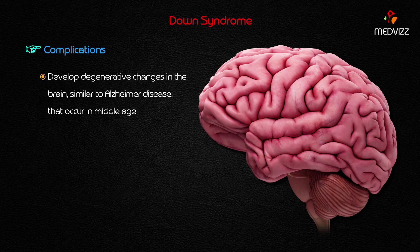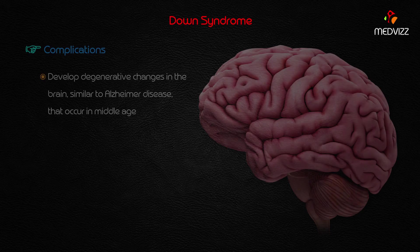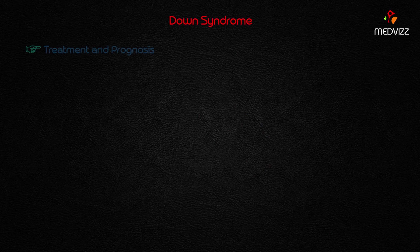To summarize the complications: acute leukemias especially acute lymphocytic leukemia, increased susceptibility to infections, and degenerative changes in the brain similar to Alzheimer's — these are the most prominent complications of Down syndrome.